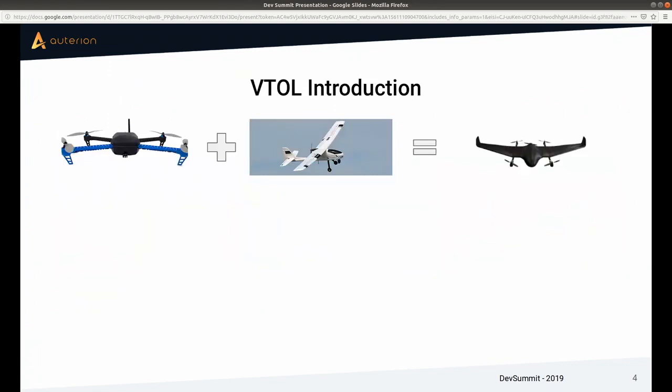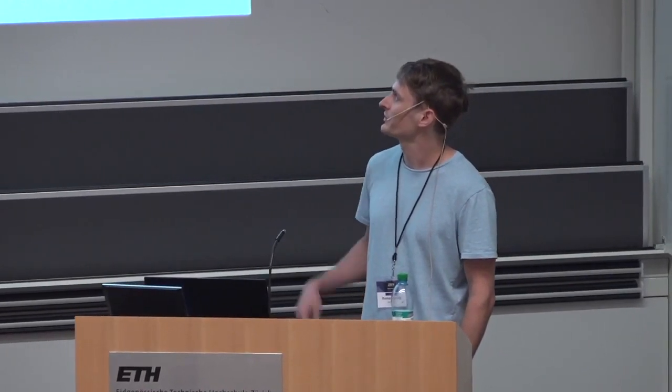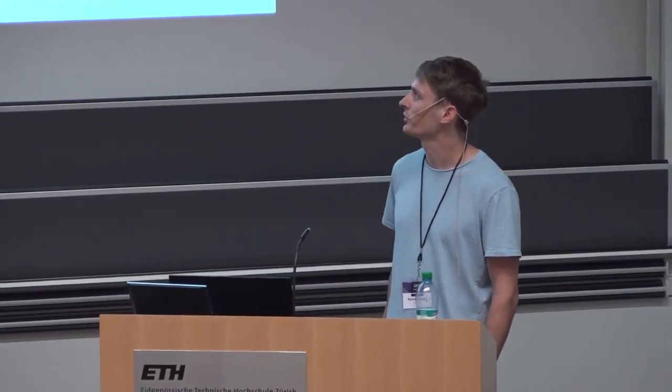So what does VTOL actually mean? VTOL stands for vertical takeoff and landing. In the easiest case, it is just a plane with a quadcopter attached to it, so you have something that looks like this — really, it is a plane that can hover.